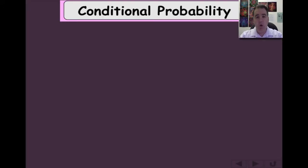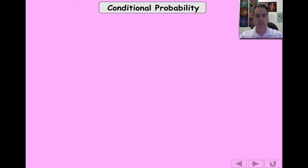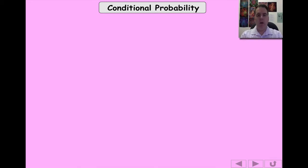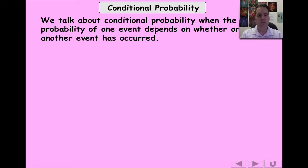Hi everyone. In this video we are going to be looking at conditional probability. This is probably the trickiest topic in probability. We've dealt with the simple ideas of probability — rolling dice, tree diagrams, Venn diagrams, sets and all that sort of thing. So we're going to put this all together now, looking at conditional probability.